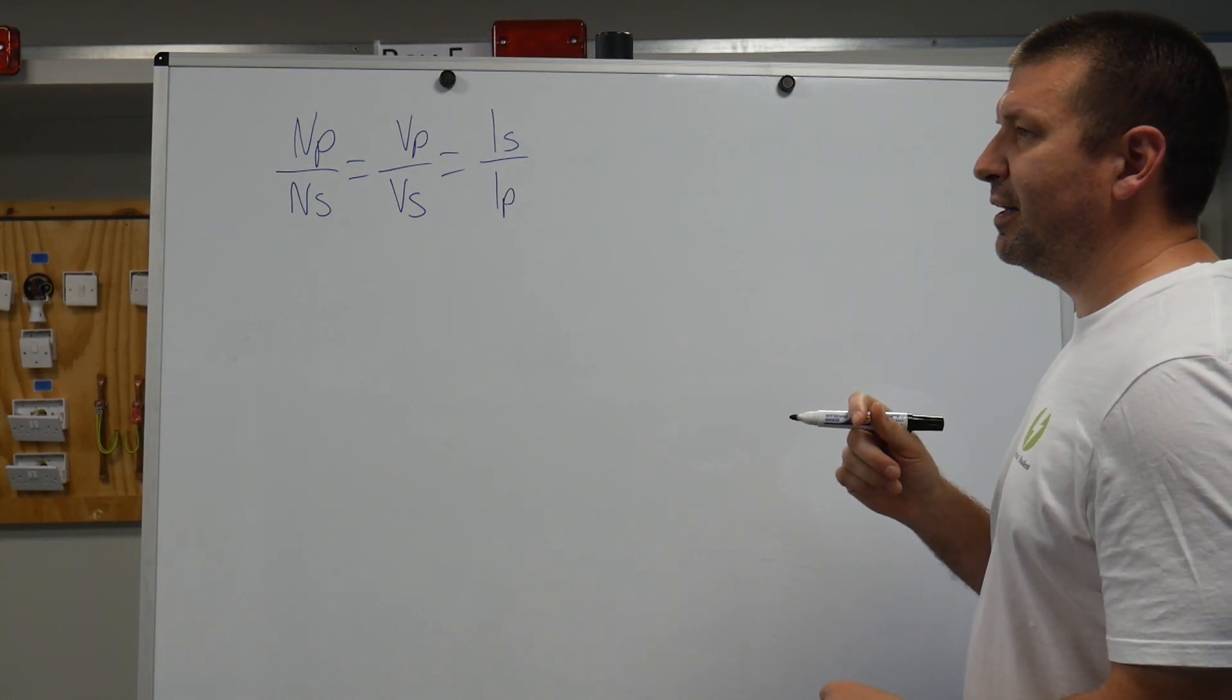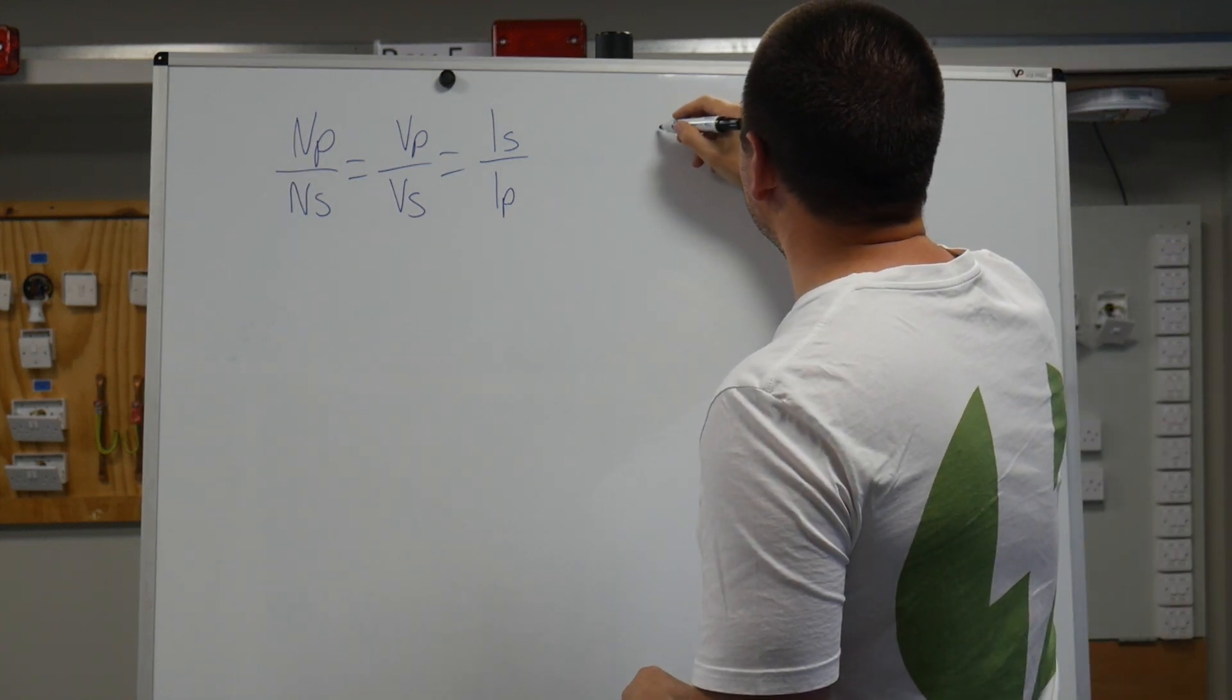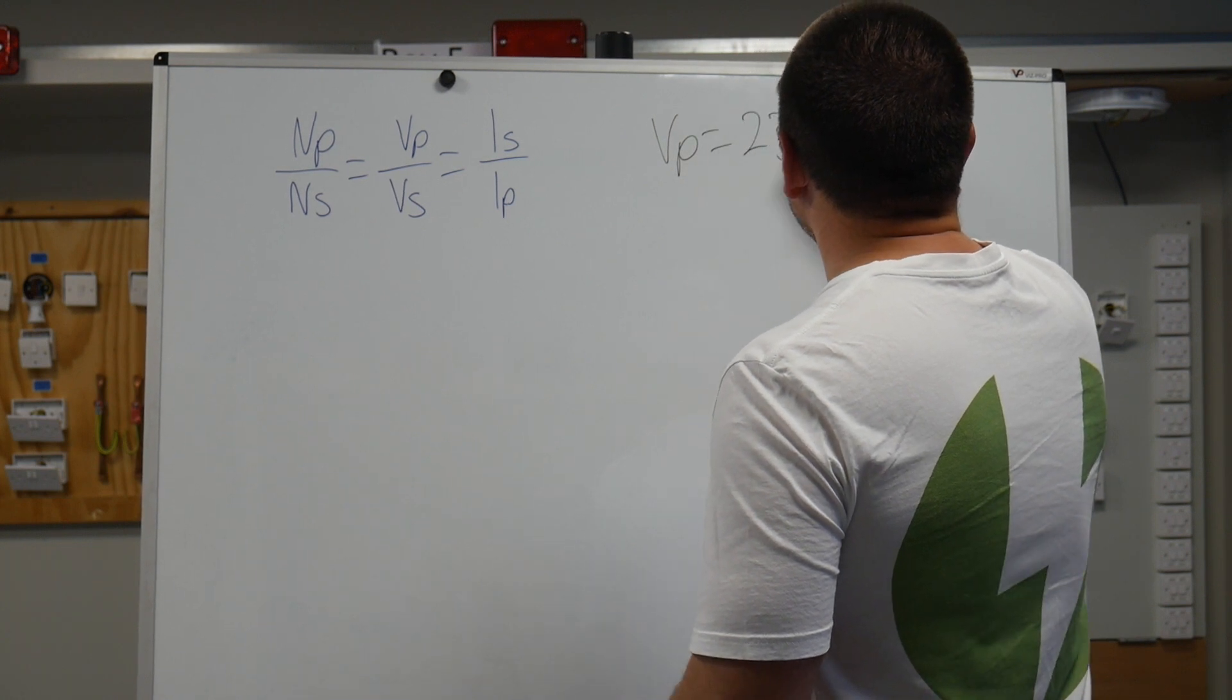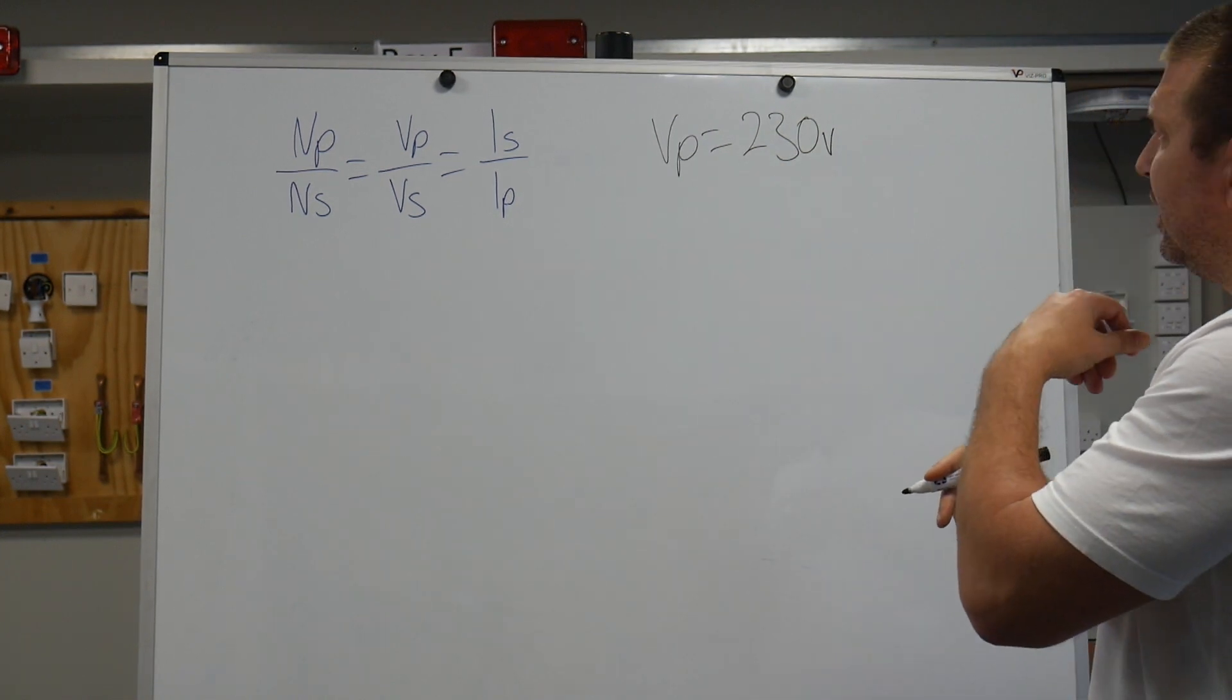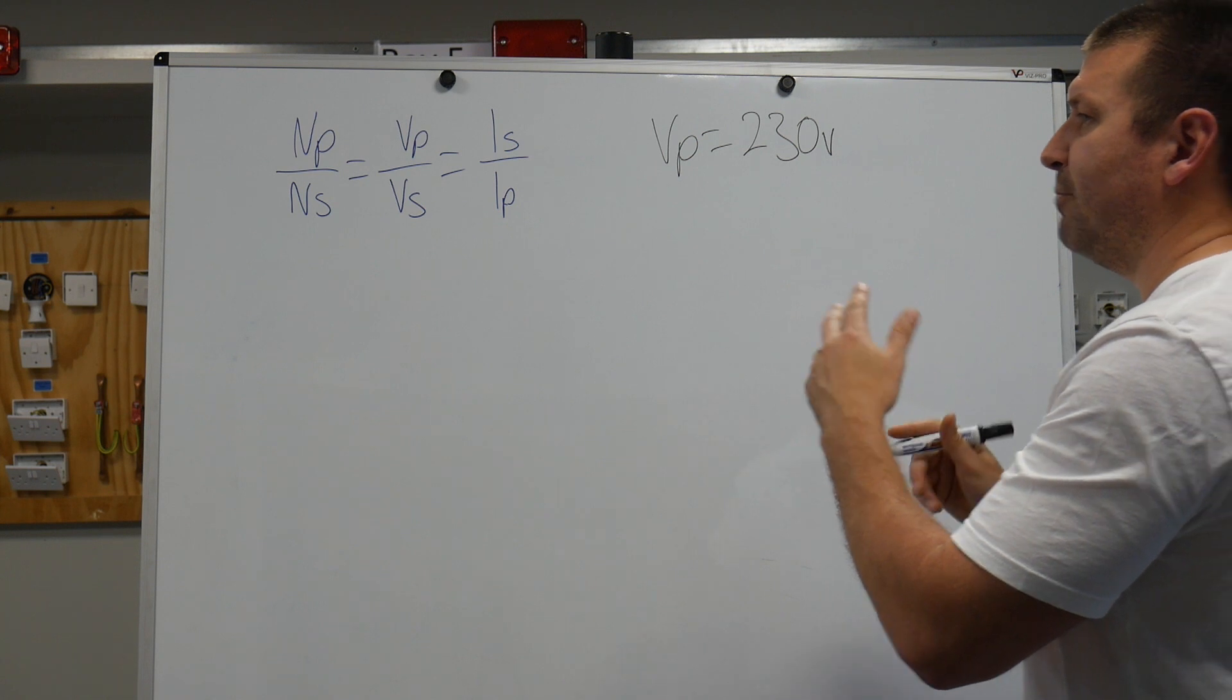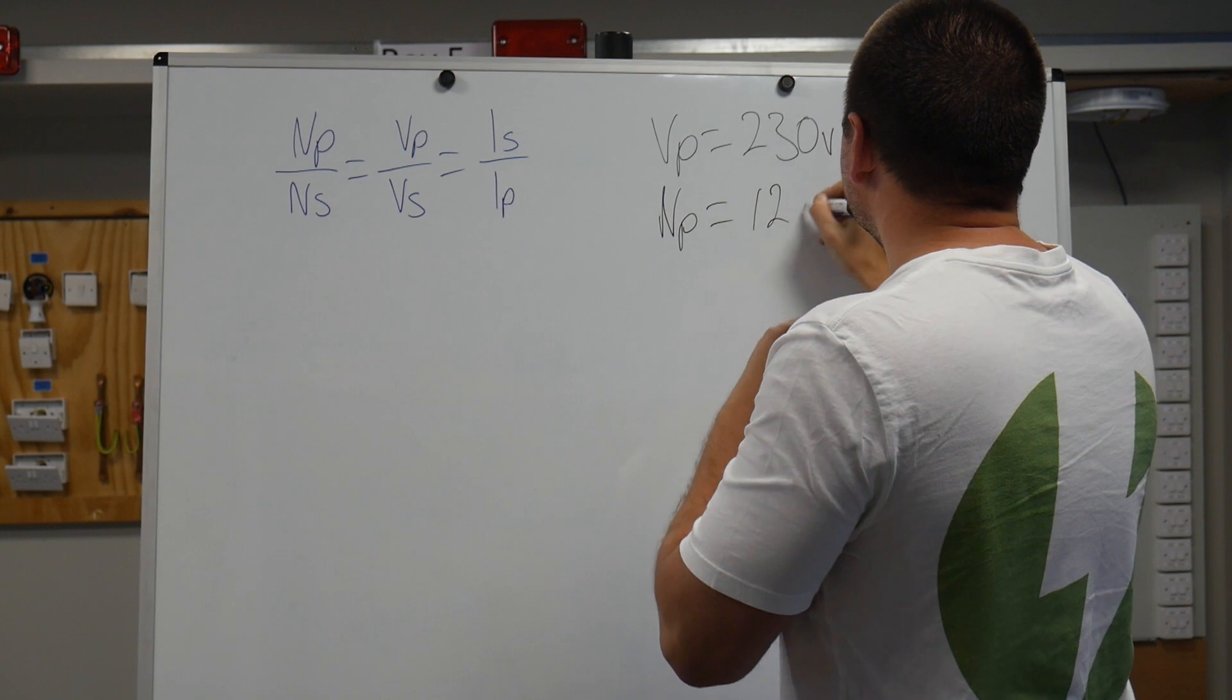So if we do Vp equals 230 volts. Let's do volts and turns. Primary, let's do number of turns 1,200. Let's do some easy values.